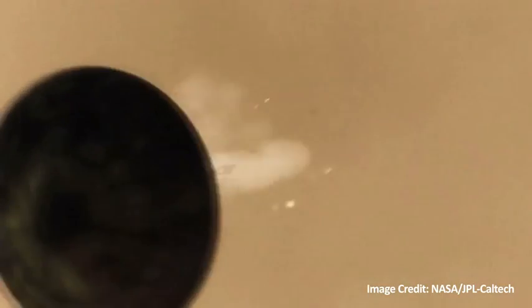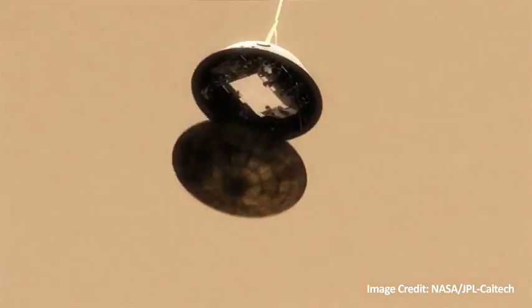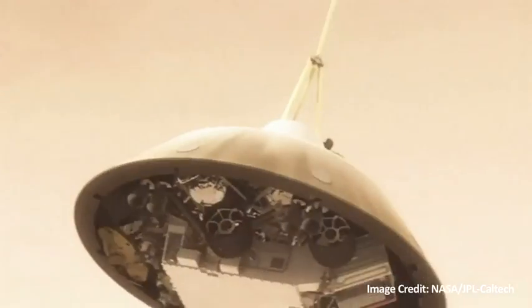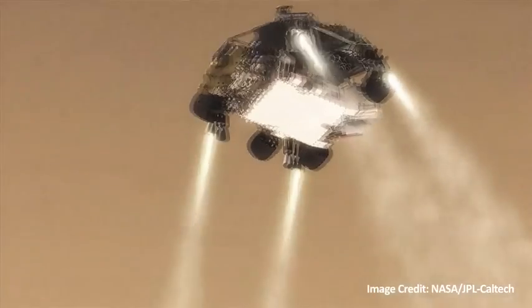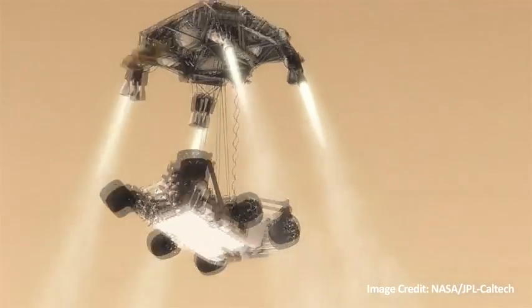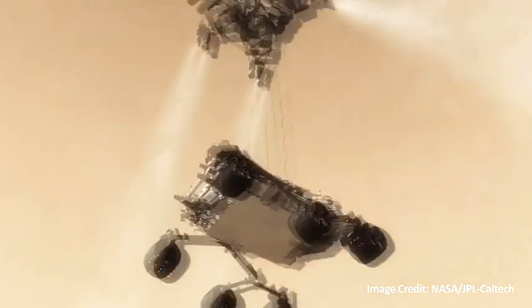It involves ablative aeroshells to slow it down as it impacts the atmosphere at 13,000 miles an hour. Then a supersonic parachute deployment, rocket motors to slow it down, and the final step is to lower it from a sky crane 20 feet above the surface to a gentle landing.